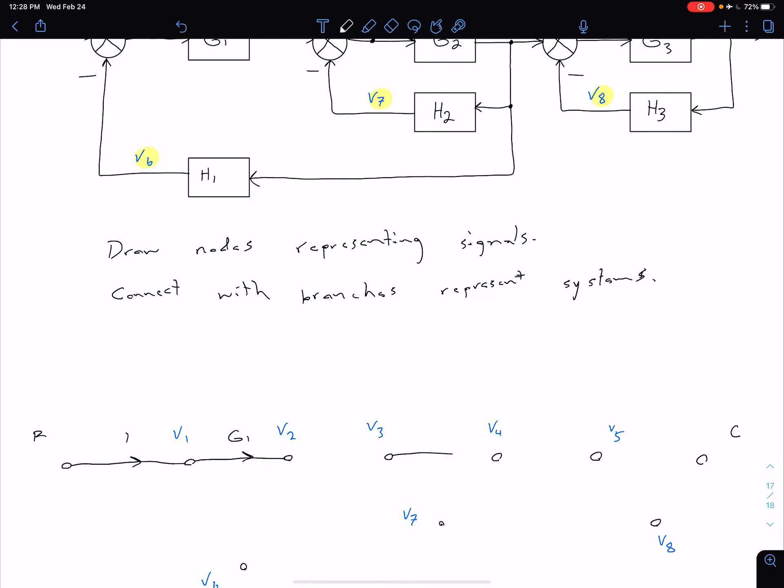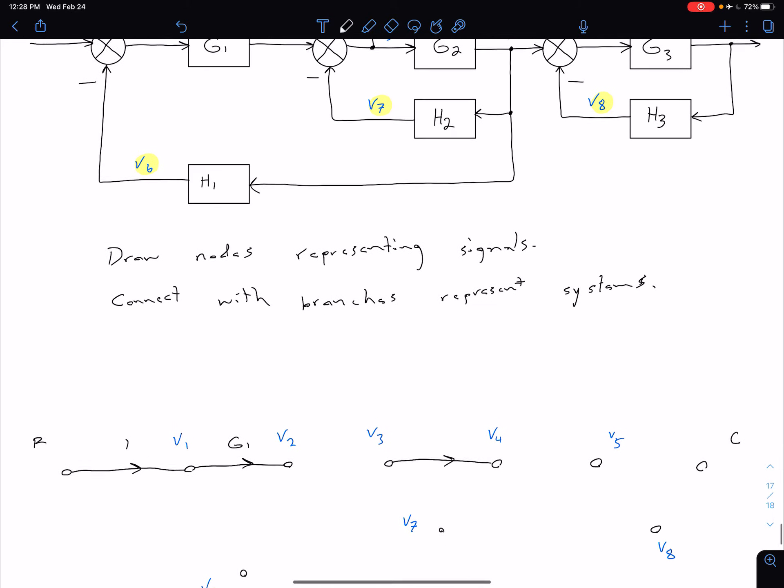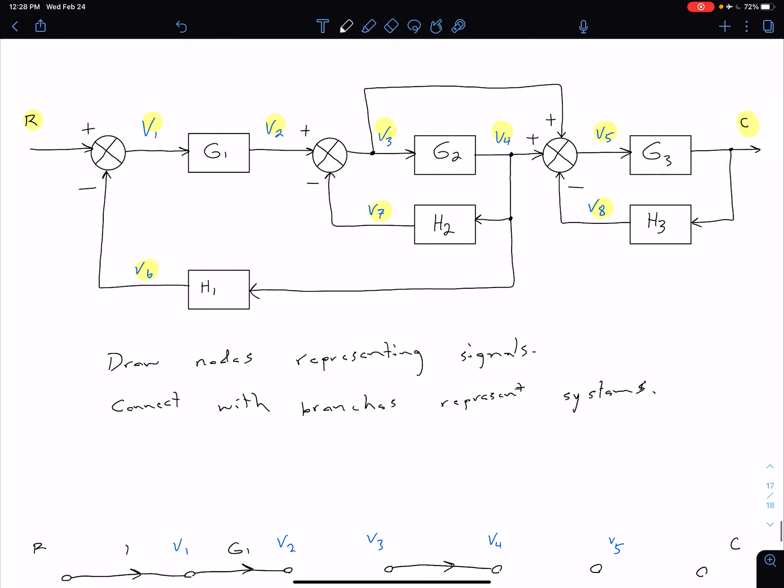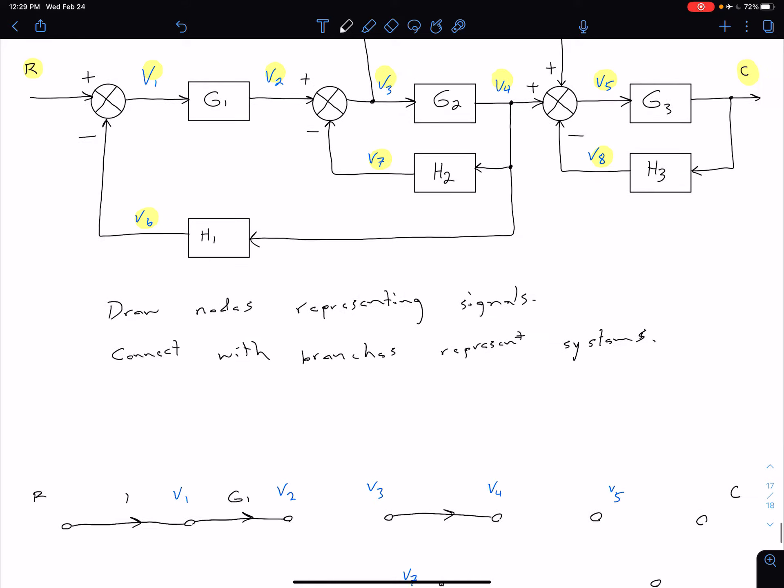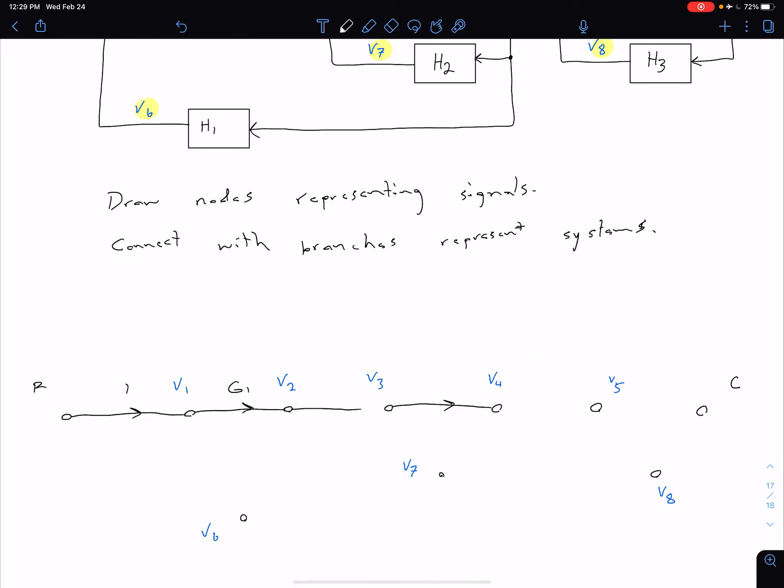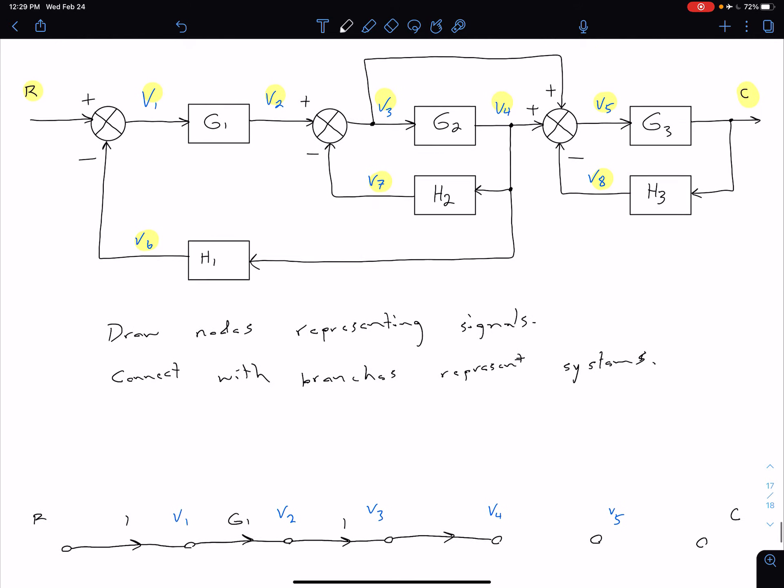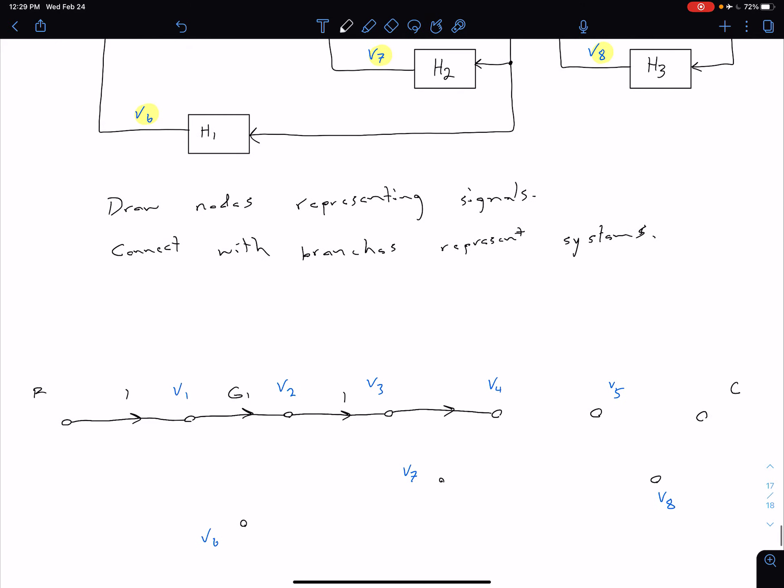And so I realize I've skipped over a part there, so let's go back to our connection between two and three. So our signal two is being added to the summing junction. So signal two is just coming over here into block three. So we have this guy here, which is being multiplied by just one. And then from V3 to V4, I kind of got ahead of myself. That one's going to be G2.